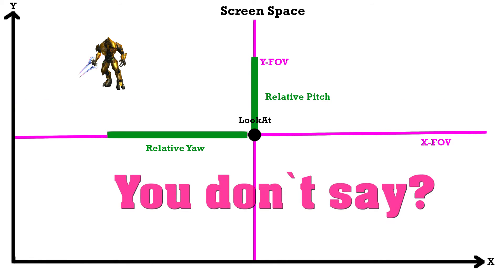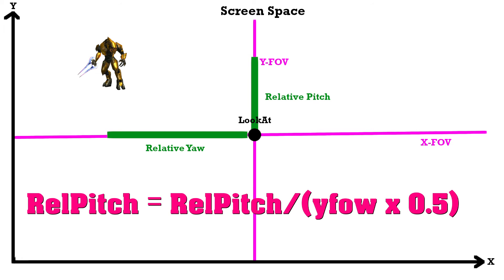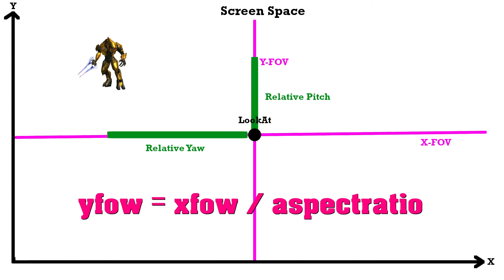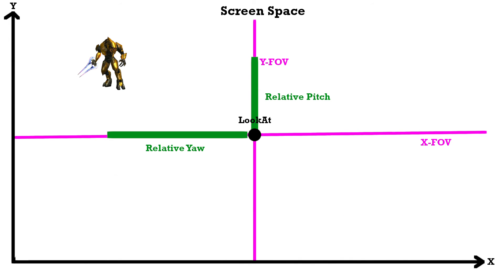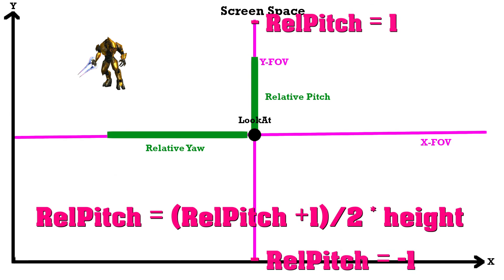Alright, now all this math stuff wasn't exactly simple, but here's a bit of good news. If you understood how this all worked, then getting the Y position is actually simple. Instead of the relative yaw angle, we now use the relative pitch angle, and we divide by the Y field of view. We can get the Y field of view by dividing the X field of view by the width and multiplying by the height of the screen — or equivalently, dividing the X field of view by the aspect ratio. Now again we have values between -1 and 1, so we do the same scaling as before: add 1, divide by 2, and multiply by the height of the screen.